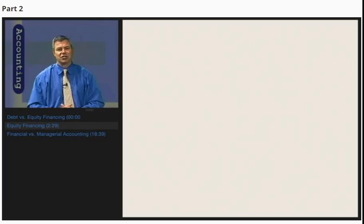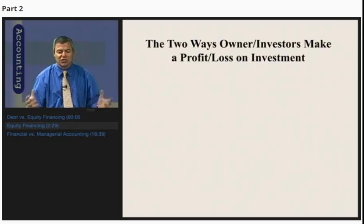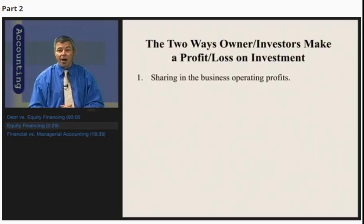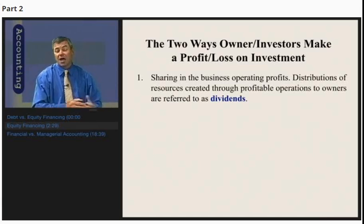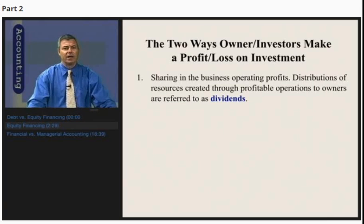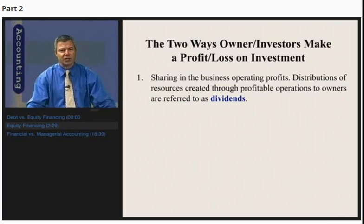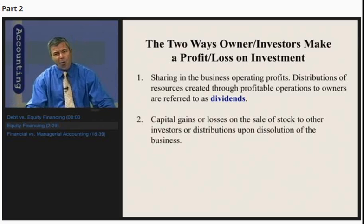There are really two ways owners or investors make a profit or loss on an investment in ownership of a business, usually represented in corporate form through stock. One way is by sharing in the business's operating profits — if a business is profitable and distributes some of those resources to owners, this is referred to as a dividend. The second way stockholders generate a return is through capital gains or losses upon the sale of stock to other investors, or through the distribution of assets upon the dissolution of the business.